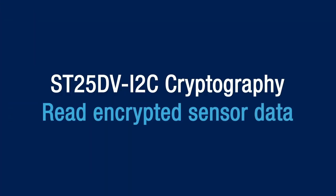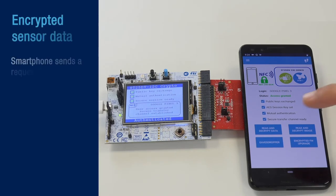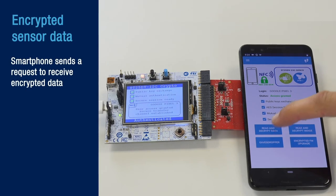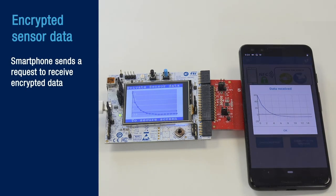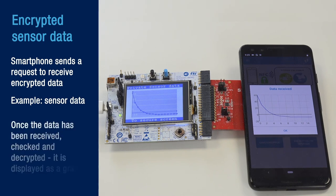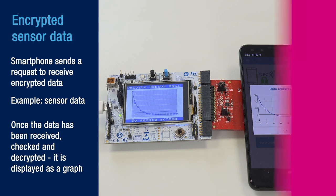Now let's see the encrypted sensor data feature. Here the smartphone sends a request to receive encrypted data — this could be some sensor data, for example. Once the data has been received, checked, and decrypted, it is displayed as a graph.